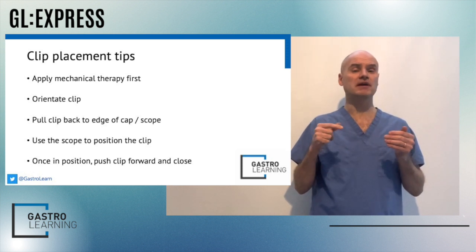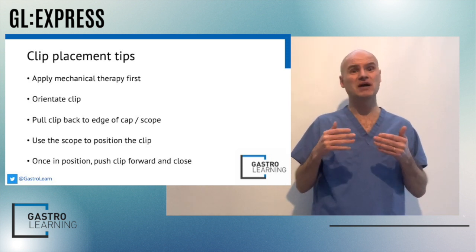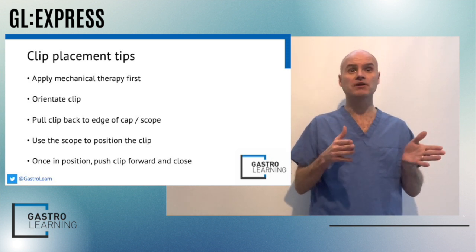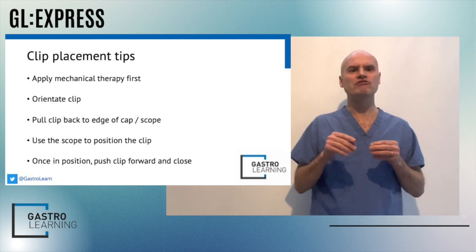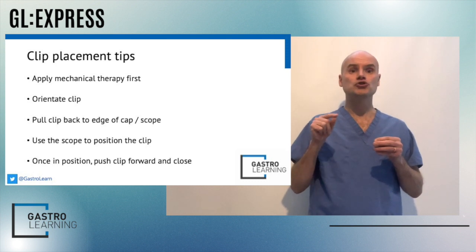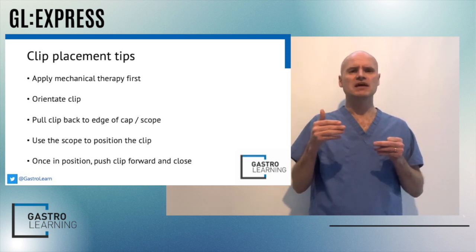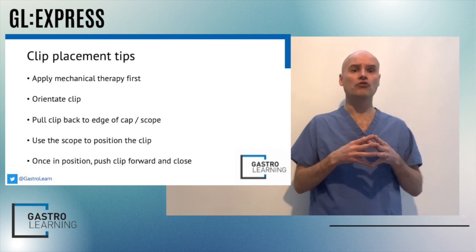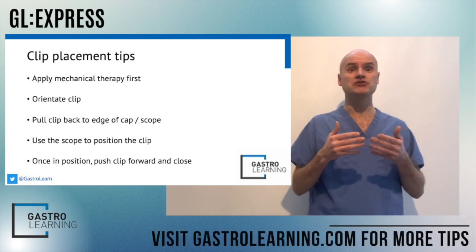Once we've successfully applied the clips, I would then inject adrenaline. The only time I inject adrenaline before applying the mechanical clip is in the context of a really brisk bleed where my visibility is limited and I need to slow things down to see what I'm doing. The other time I inject adrenaline first is in Forest 2b lesions. These lesions do need endoscopic therapy, but it also depends on whether you are confident to deal with them. I would inject adrenaline liberally into the area, then remove the clot using various techniques, ensuring I'm prepared to deal with a brisk bleed should that happen.